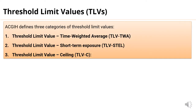The American Conference of Governmental Industrial Hygienists (ACGIH) defines three categories of Threshold Limit Values: 1. Threshold Limit Value – Time Weighted Average (TLV-TWA). 2. Threshold Limit Value – Short-Term Exposure (TLV-STEL). 3. Threshold Limit Value – Ceiling (TLV-C).